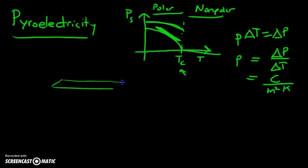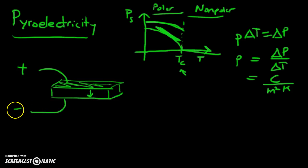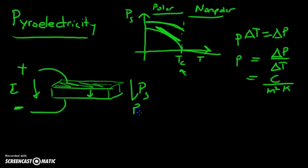Now let's understand how we can utilize this to calculate the charge. If we have a pyroelectric material — a material that exhibits a net spontaneous dipole — remember that freshly made pyroelectric materials don't have a net dipole. You have to pole the material by applying a positive and negative charge such that the polarization vector aligns downward, producing an electric field that aligns the net polarization for a bulk material.